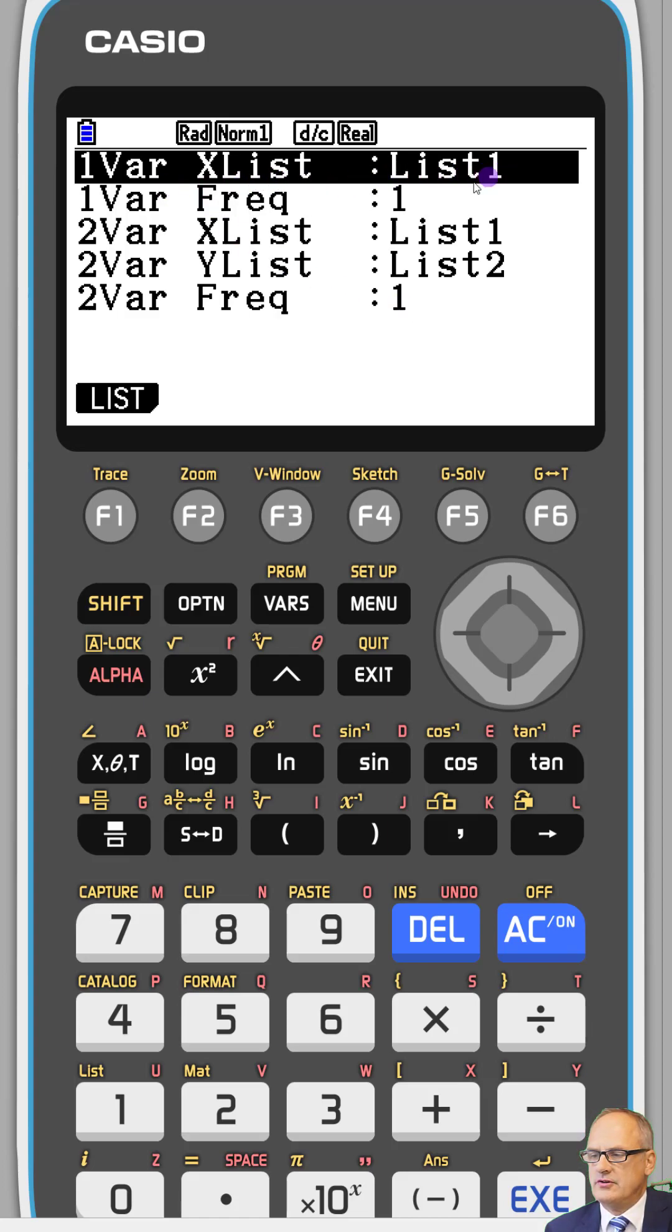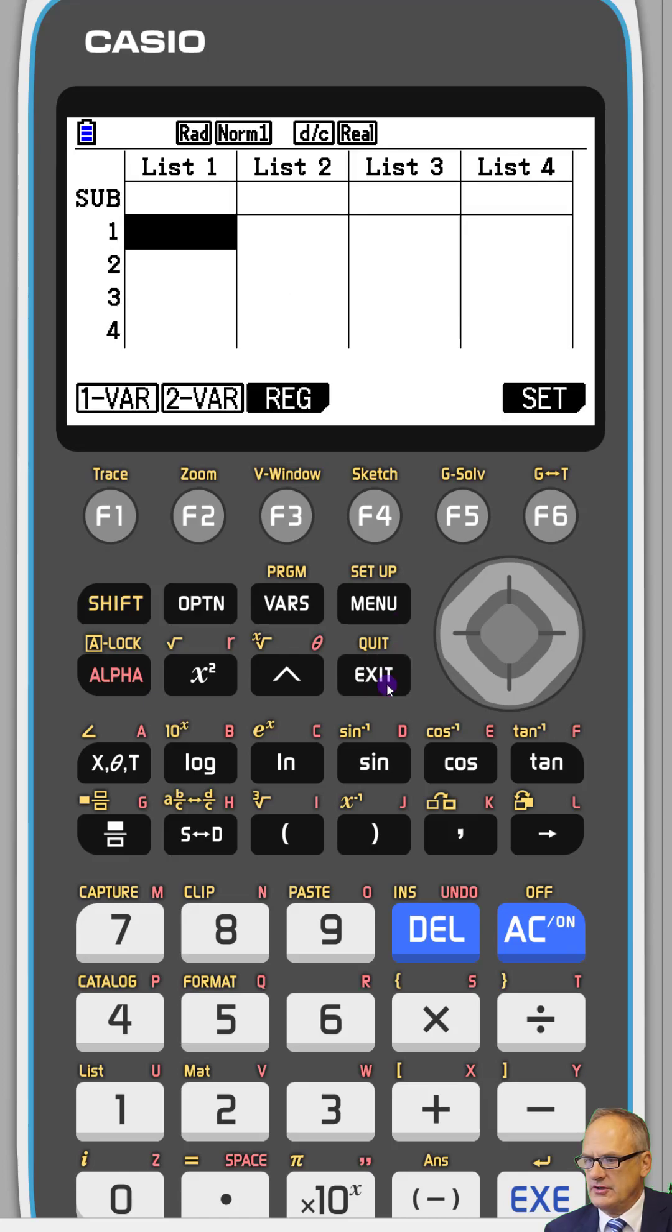With the one variable here, you've got the frequencies one. You can change the frequency to be a column. So we could change if we're going to have more than one of those pairs. We could change list three to be the frequency if we wanted. But it's not likely you're going to have more than one of any pair. So let's just go exit because that's all OK. List one, list two, our X and Y values, and we have one of each.